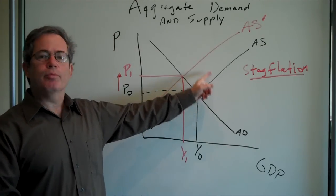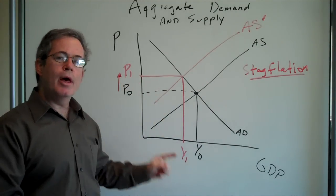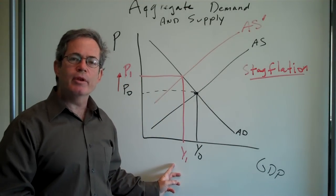We saw that the aggregate supply curve shifts up, prices go up, but output falls and unemployment increases.